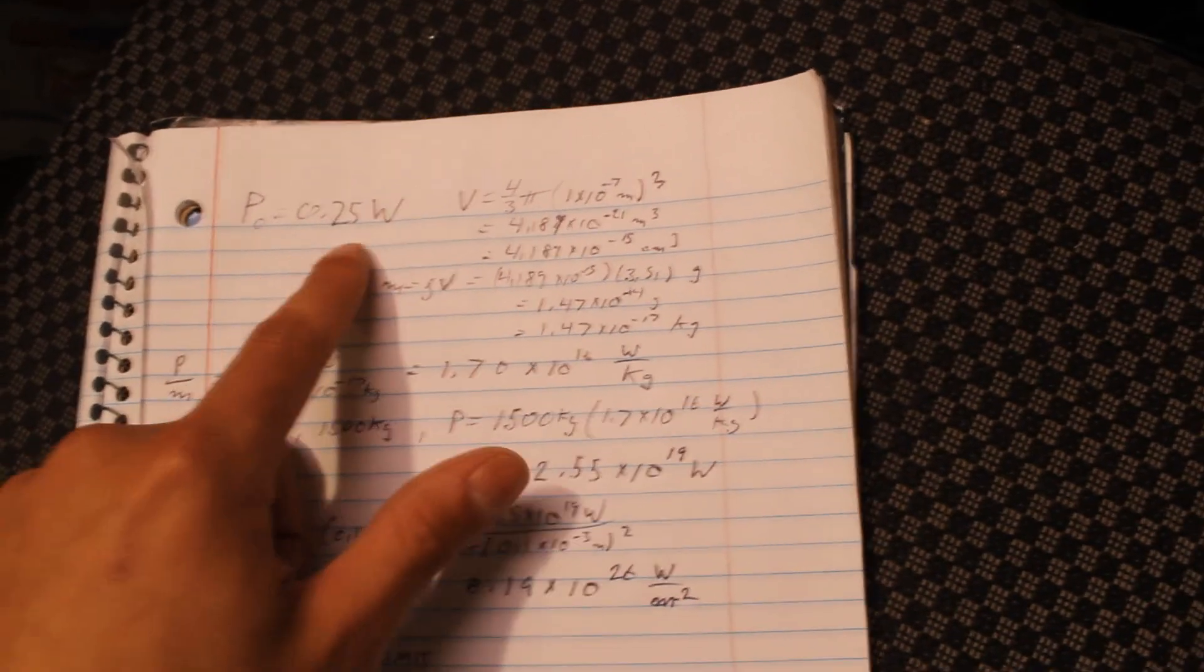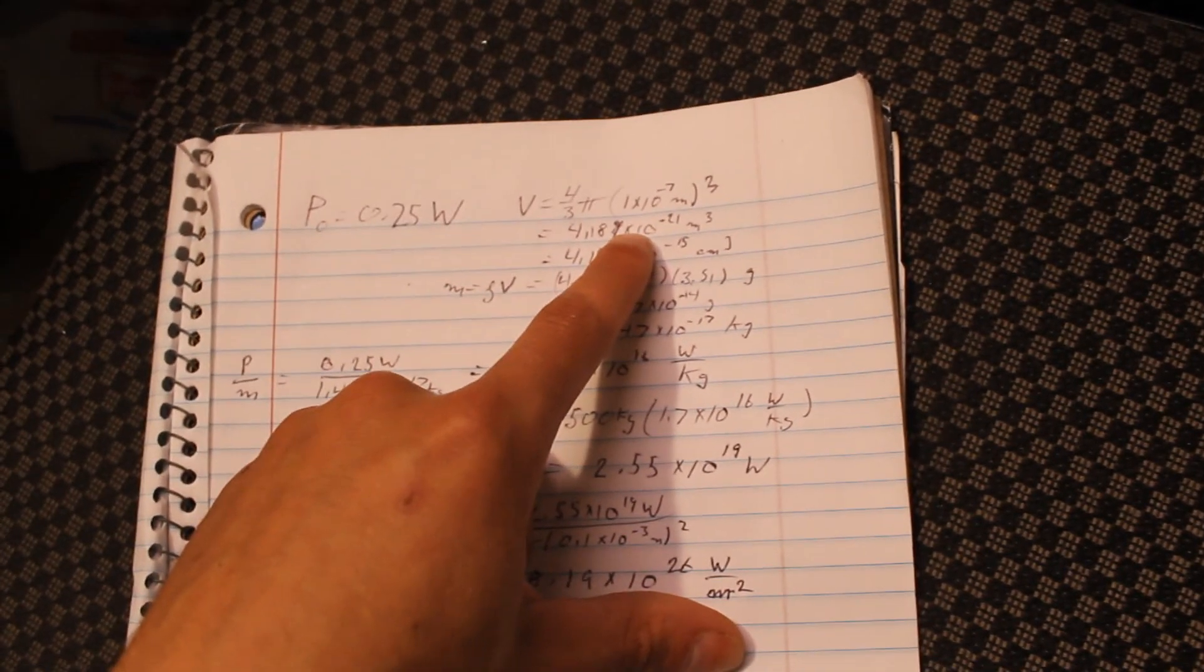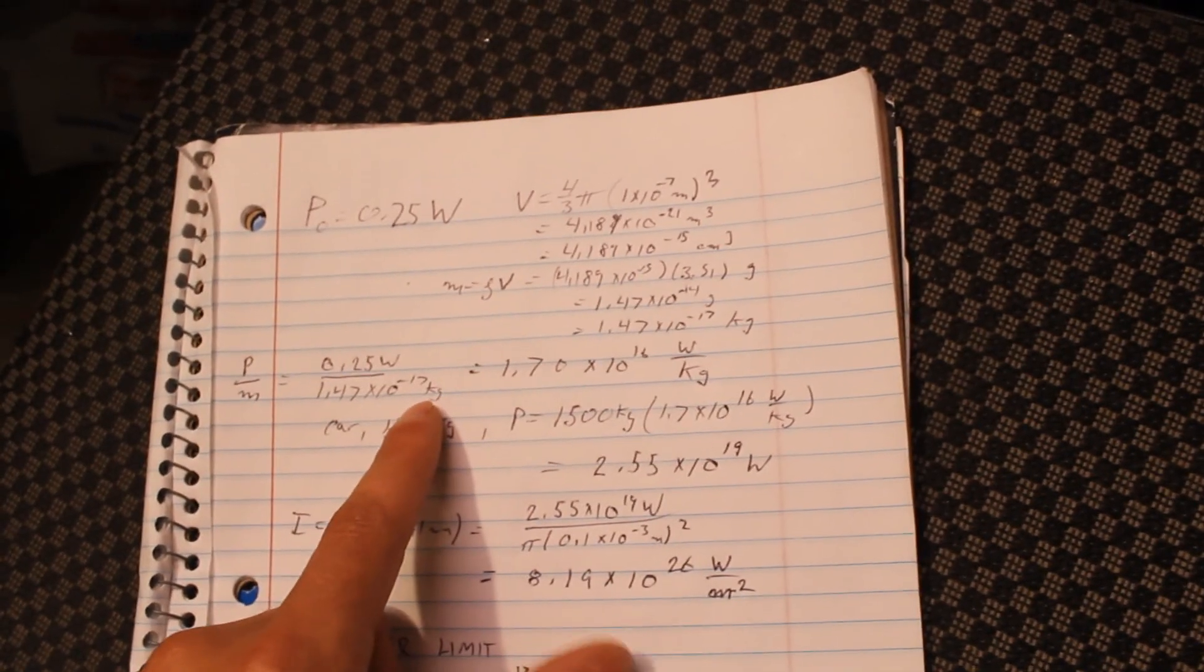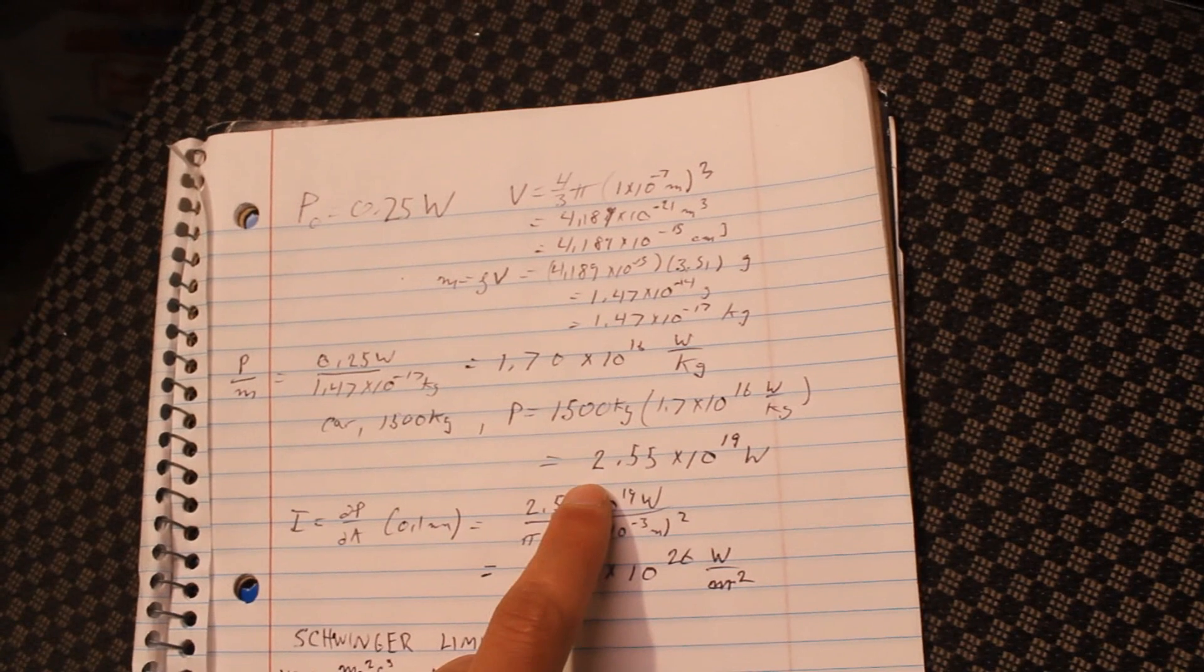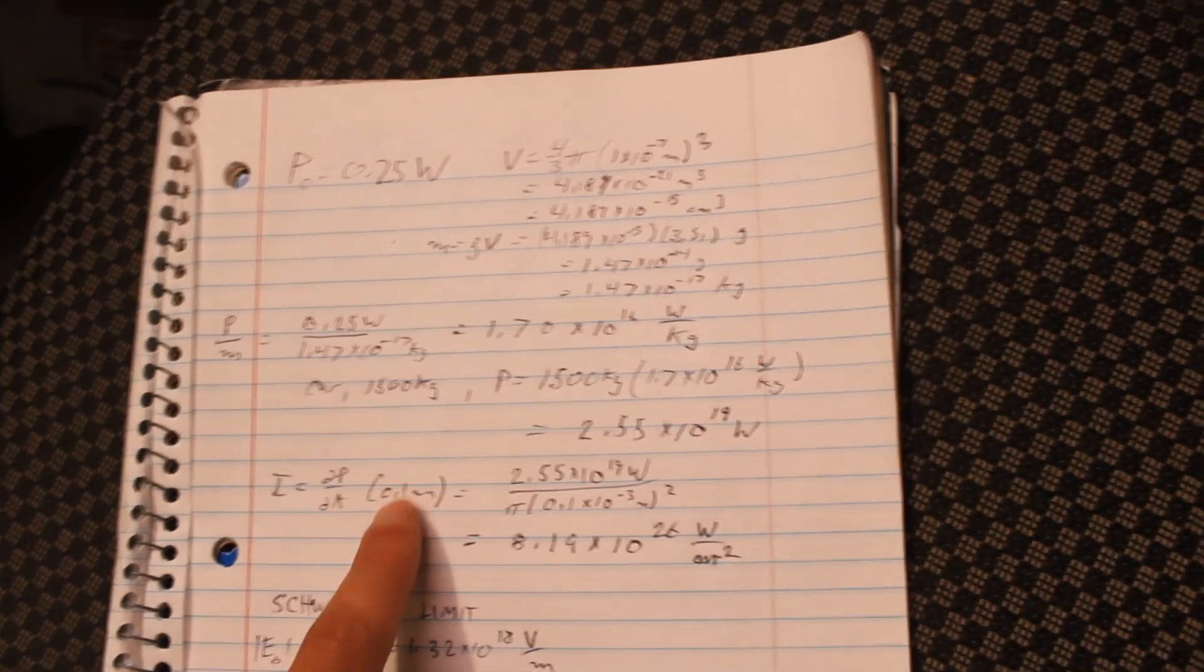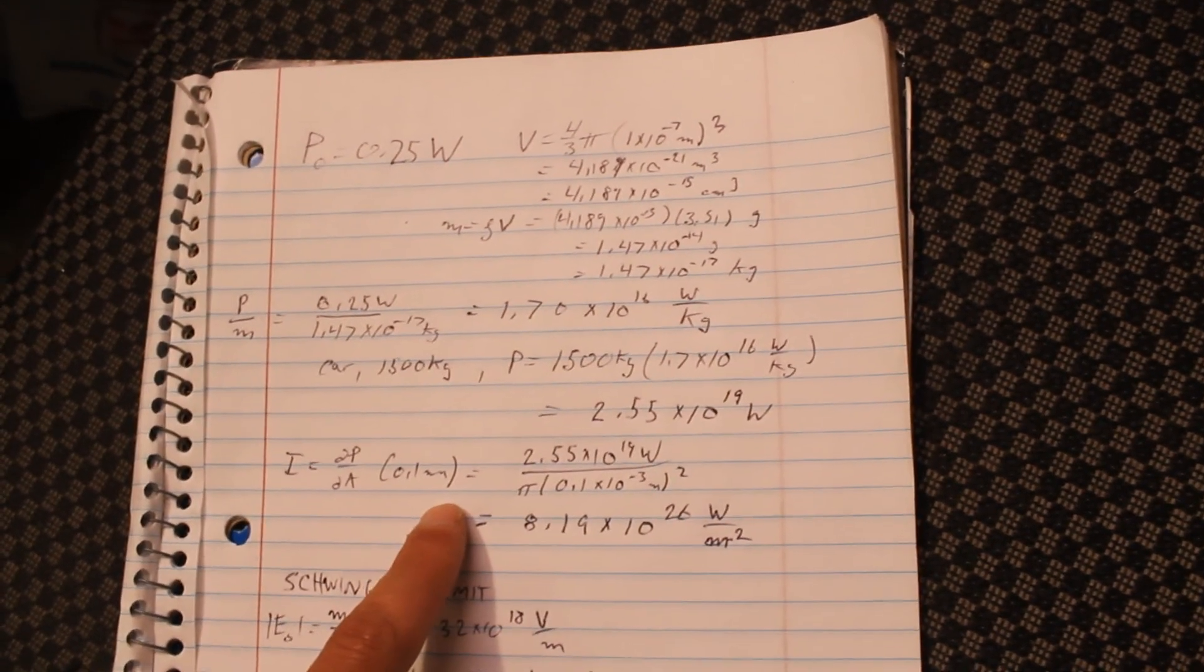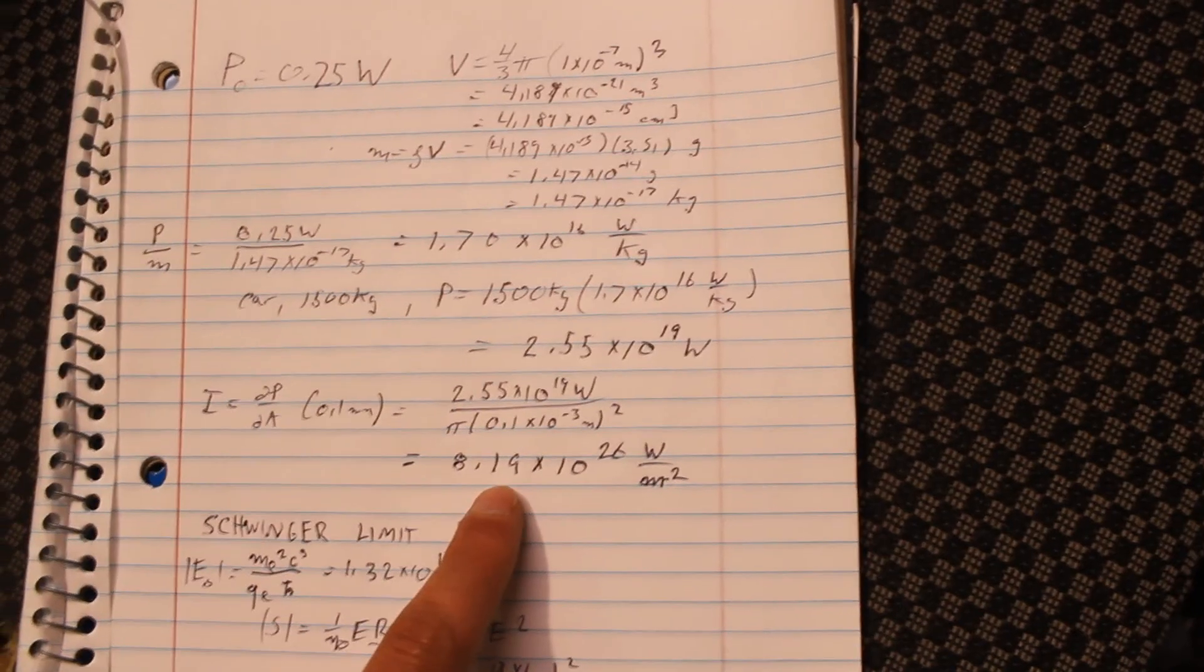For my demonstration, I used a laser that was a quarter watt and levitated a diamond that was roughly 100 nanometers across. Now, if I use that same ratio to try figuring out what it takes to levitate a car that's 1,500 kilograms, I get a power of roughly 2.55 times 10 to the 19th watts. That's a lot of power. Now, let's say I were to focus down this light to a small spot of 0.1 millimeters across. I get a power density of 8 times 10 to the 26 watts per square meter.